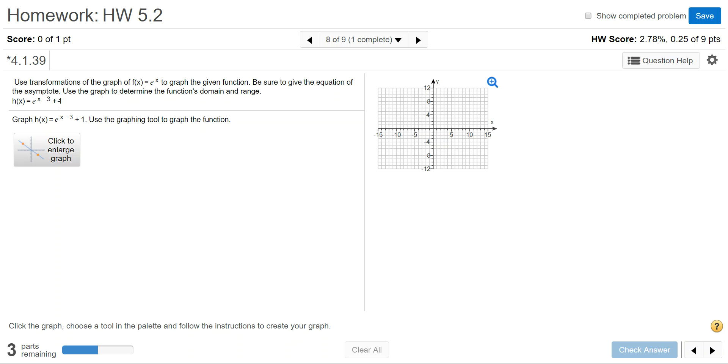Outside of the power, we have plus 1, and that's a vertical movement up 1. So we want to take the original exponential graph and shift it right 3, up 1.